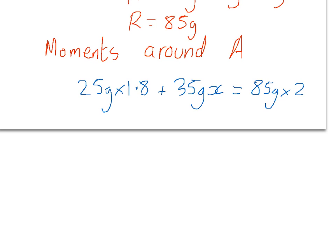Now, as g appears in all three parts, we can cancel it out. And we're going to be left with 45 plus 35x is equal to 170.